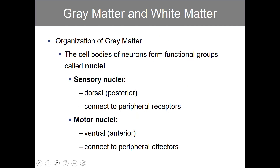The cell bodies of neurons form functional groups called nuclei, of which there are two main types: sensory nuclei and motor nuclei. Sensory nuclei are dorsally oriented within the spinal cord and connect to peripheral receptors. Motor nuclei are ventrally oriented, connecting to peripheral effectors.